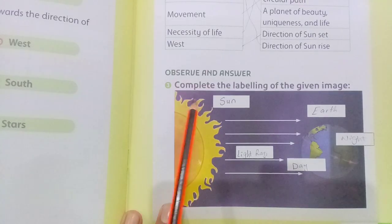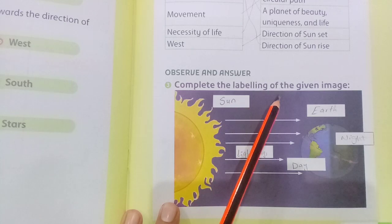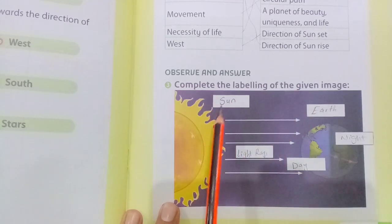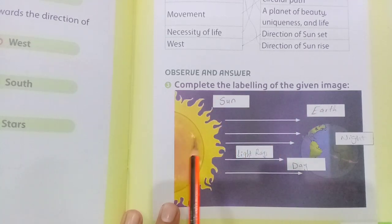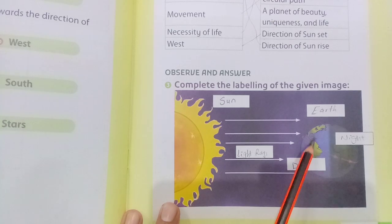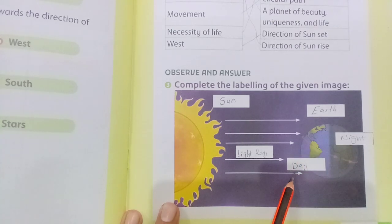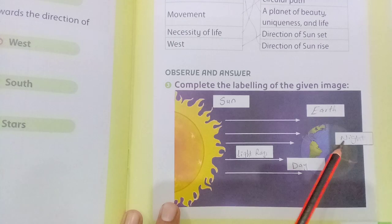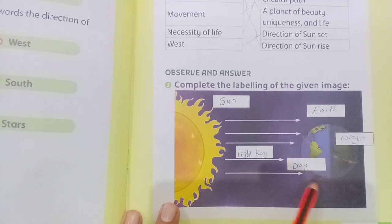Complete the labeling of the given image. Sun, light rays — this portion is called day, and the backside is night, and the whole is earth.